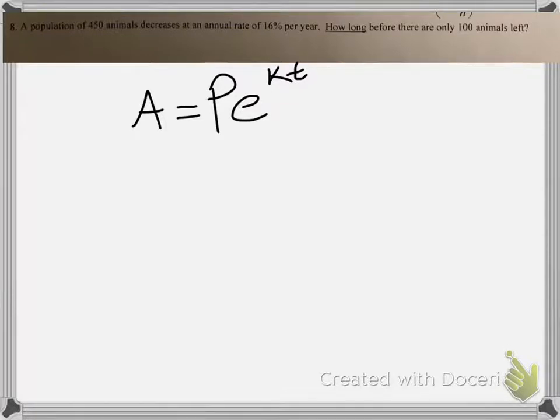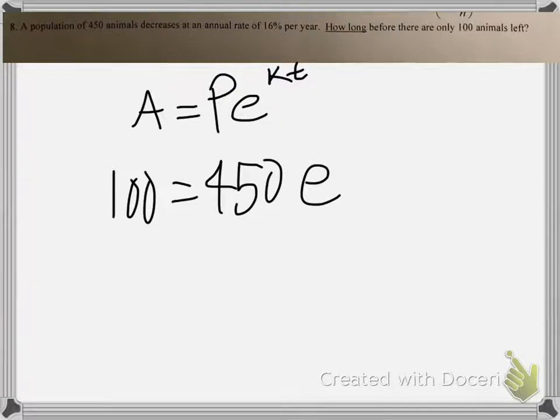So it's going to be 100 equals, and then it's going to be 450, E, and then K is actually our percent. I could have put R, but the formula has 0.16. Alright, remember to move the decimal places two places over, and then T.